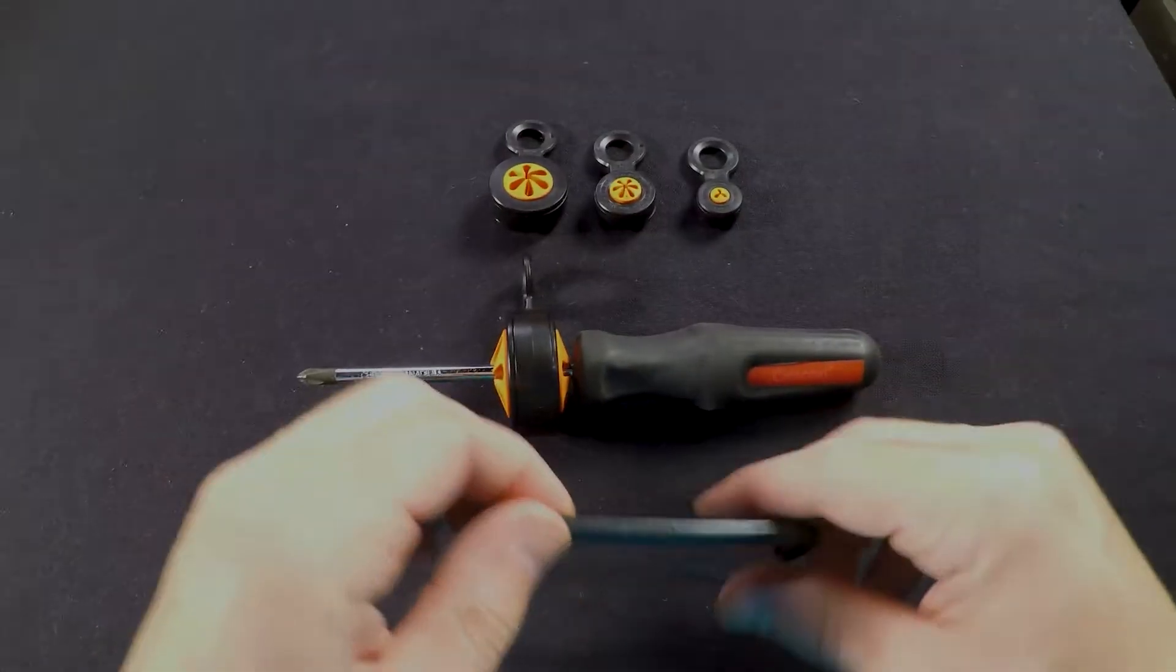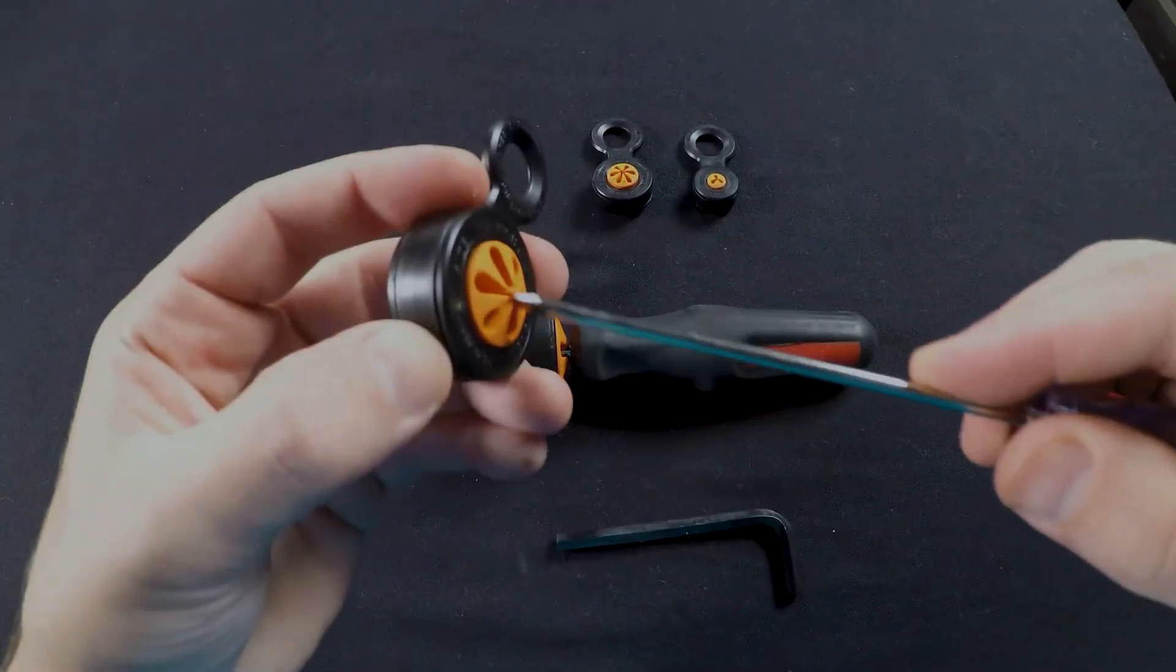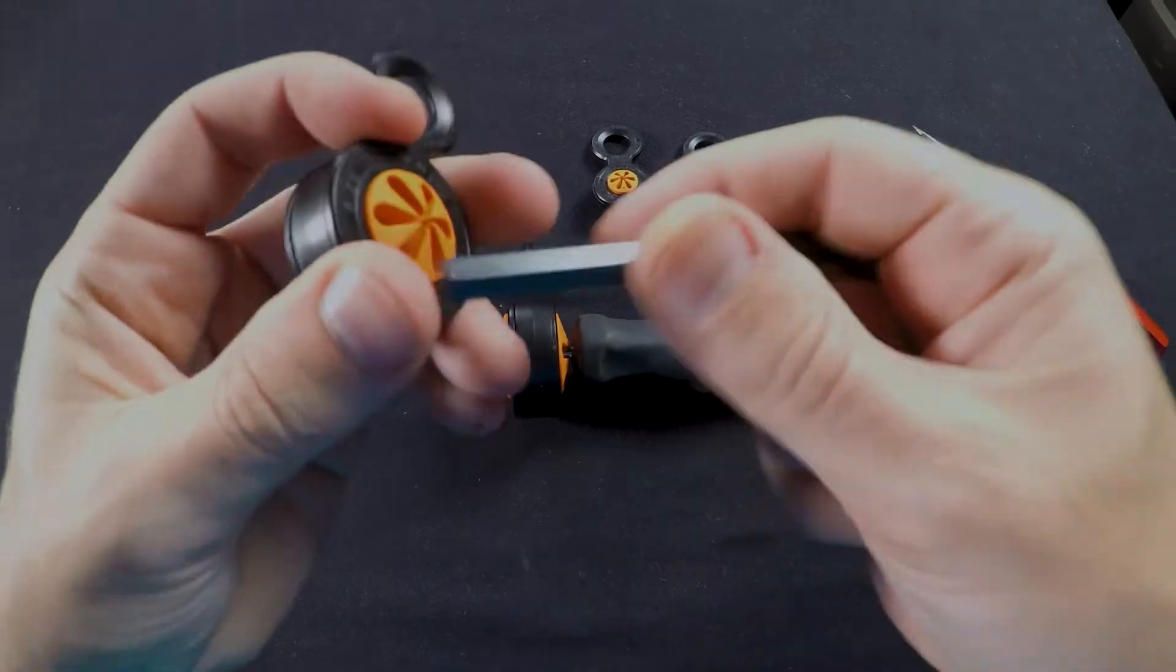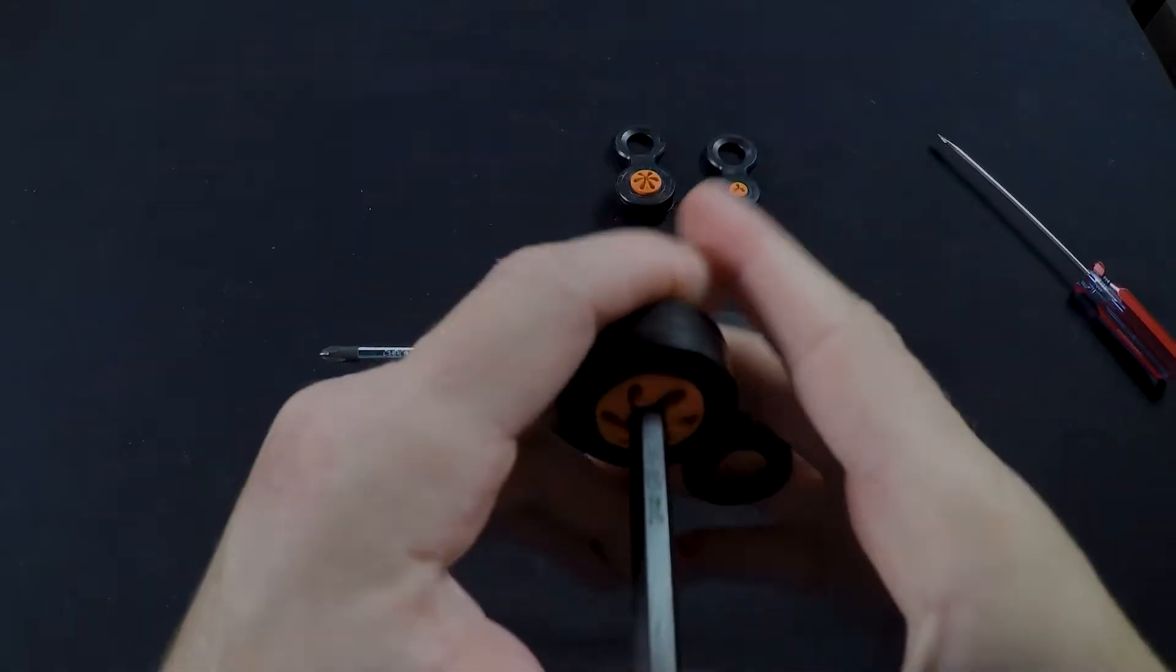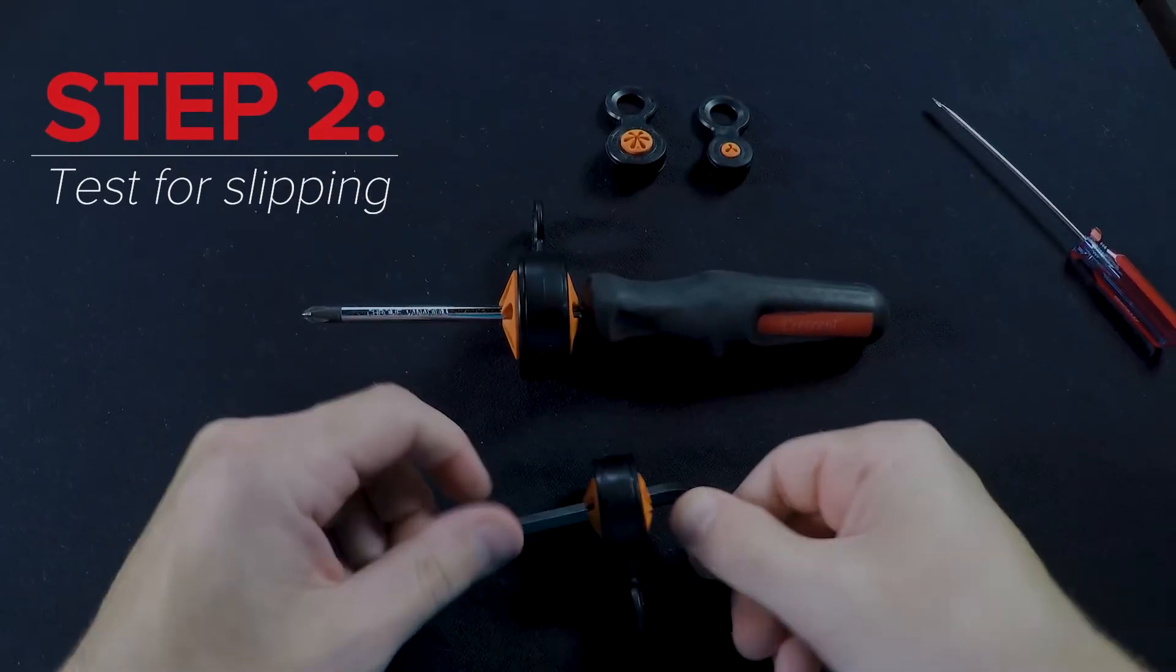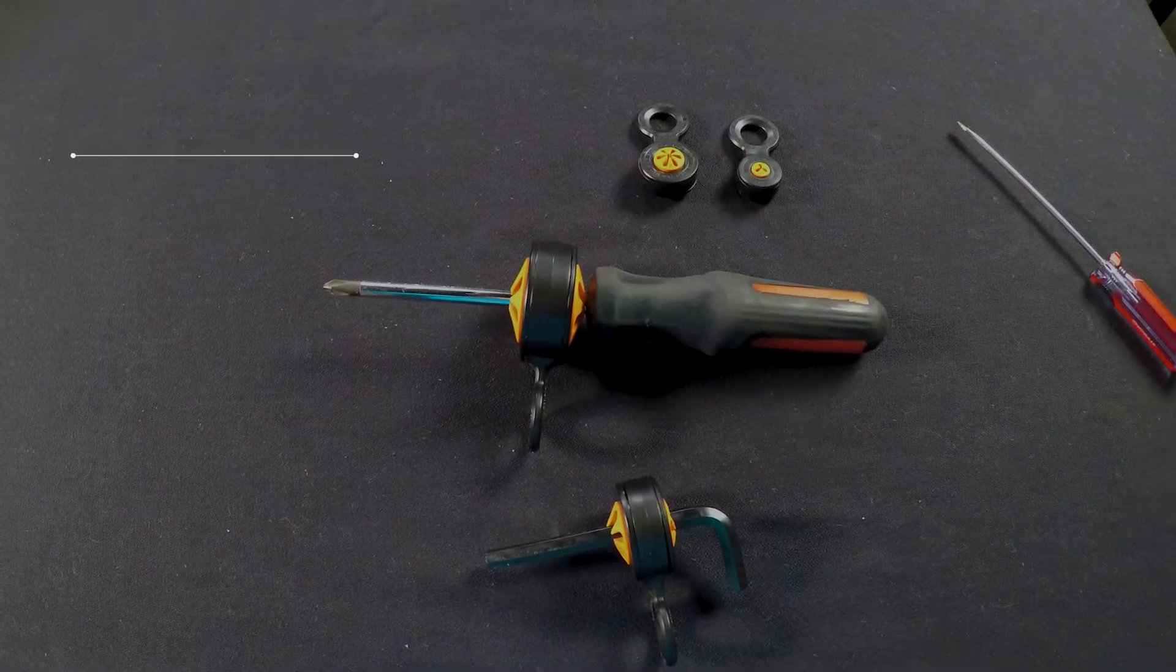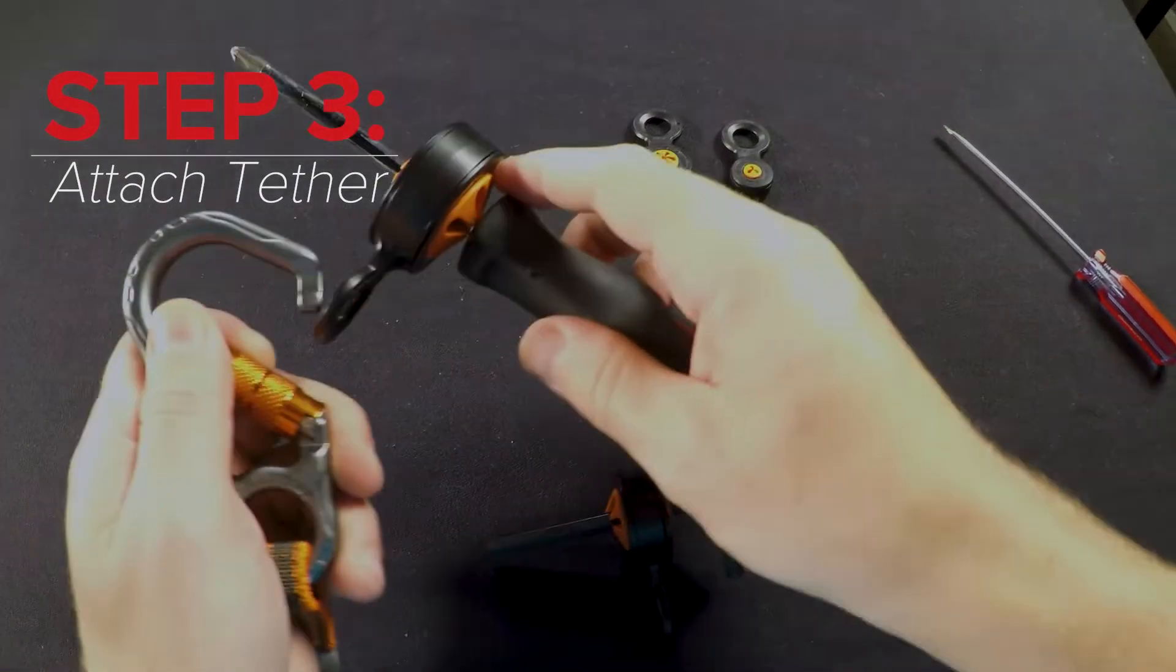If your tool is blunt-ended, you may need to pierce the membrane with a sharp tool first. Once through the membrane, slide the tool as far onto the membrane as possible. Check to make sure the membrane isn't sliding up and down the tool. Attach your preferred tool tether and you're good to go.